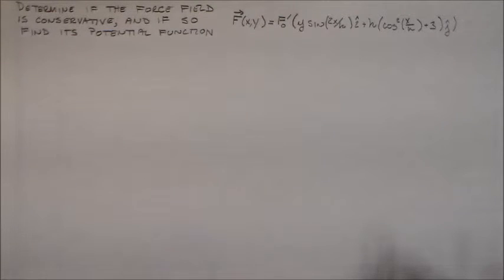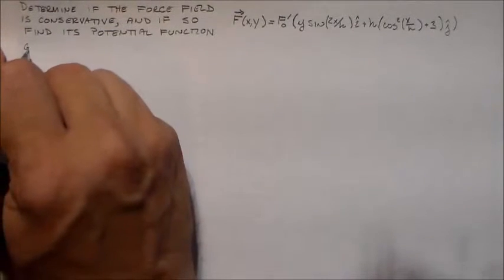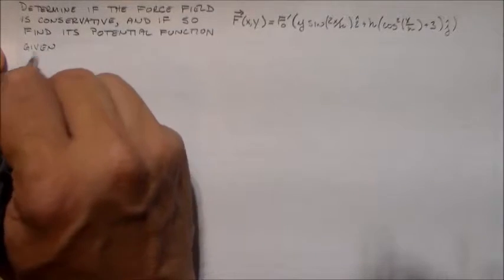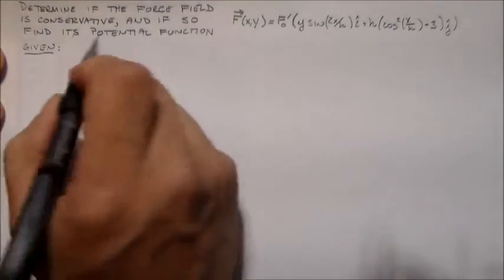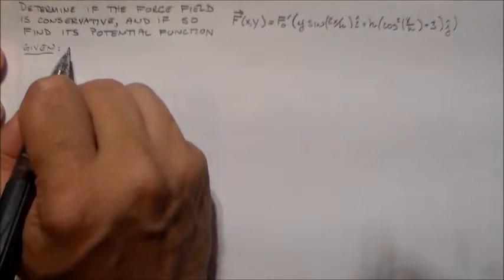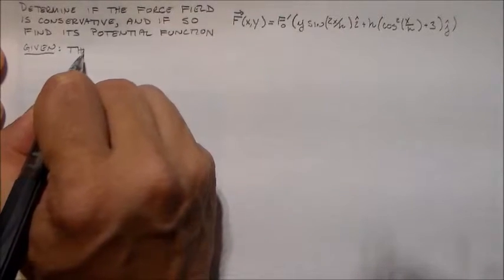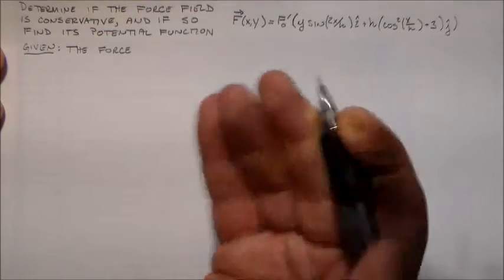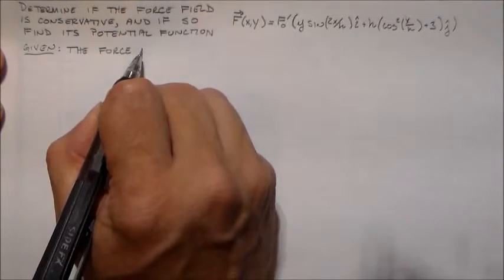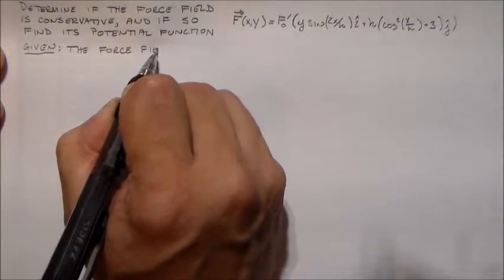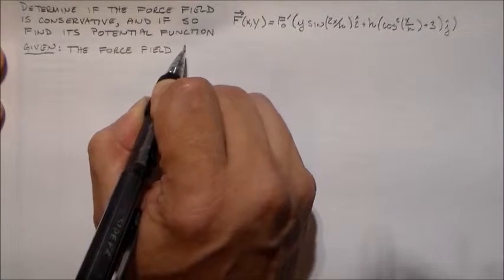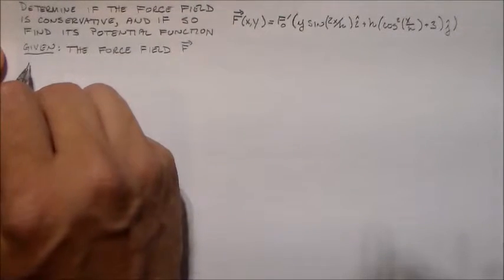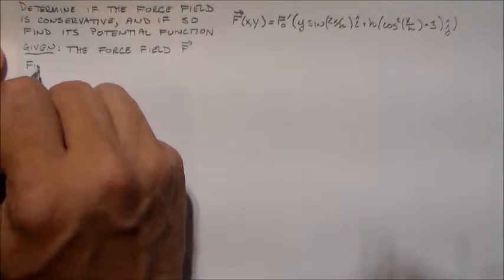Now, the first part is going to be fairly simple. When I'm trying to find if it's conservative, that's just taking a couple of derivatives. But going back up to the potential function, that can be a little more difficult for students. So that's the second part here.